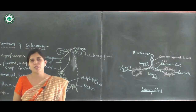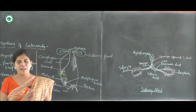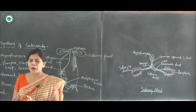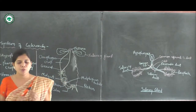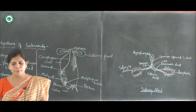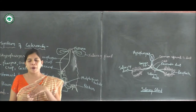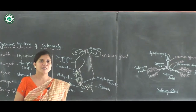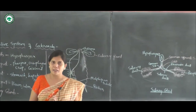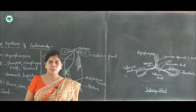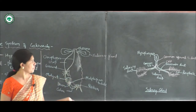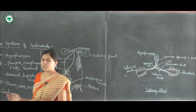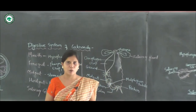The cockroach is an omnivorous animal, meaning it feeds on both plant and animal material. It has chewing and biting type of mouth parts that chew the food and push it into the alimentary canal. As food passes through the alimentary canal it is digested, and finally the undigested food is eliminated from the anus. This completes the study of the digestive system of the cockroach.